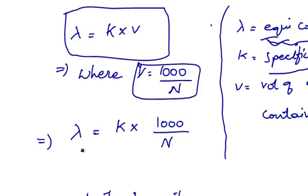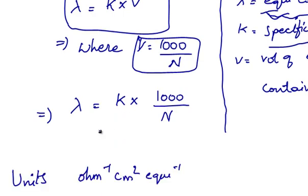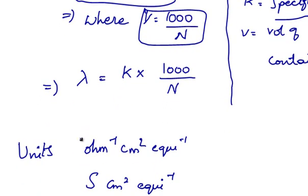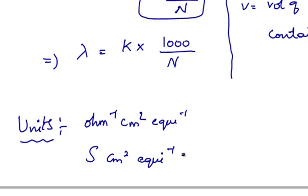That implies lambda is equal to specific conductance into 1000 by N. The units of equivalent conductance are Ohm inverse centimeter square equivalent inverse, or Siemen into centimeter square into equivalent inverse, where Ohm inverse is equal to Siemen.